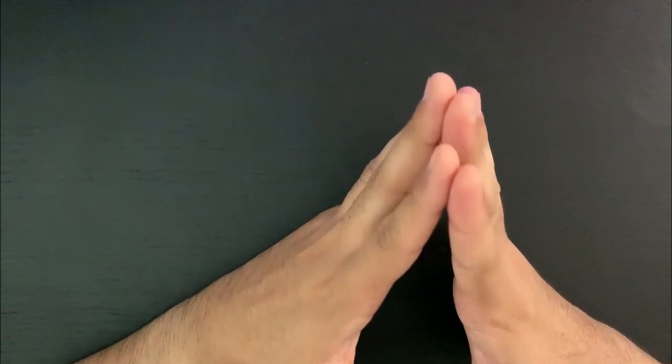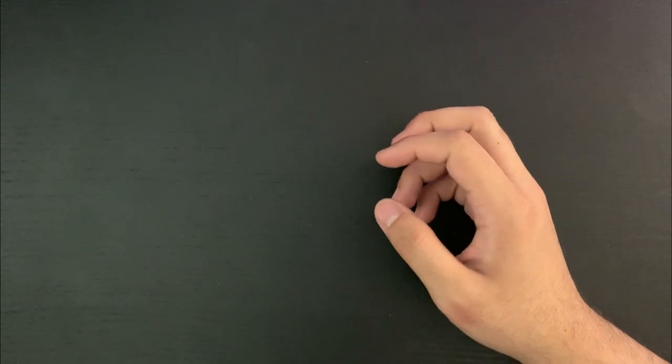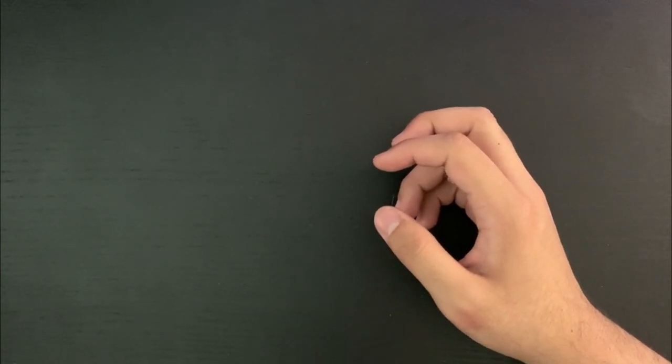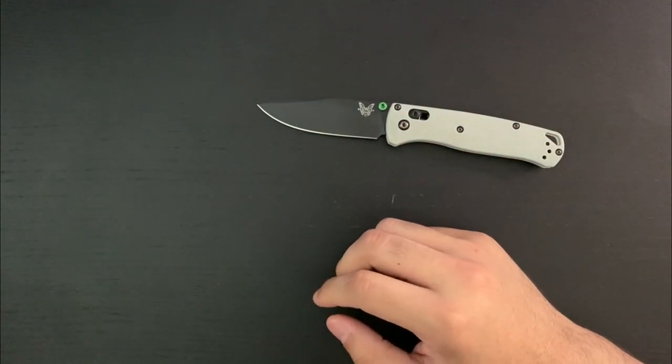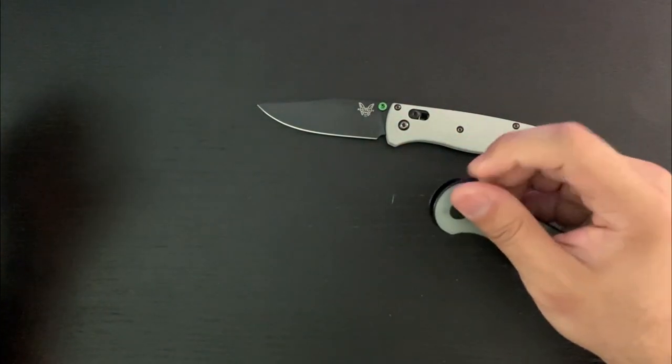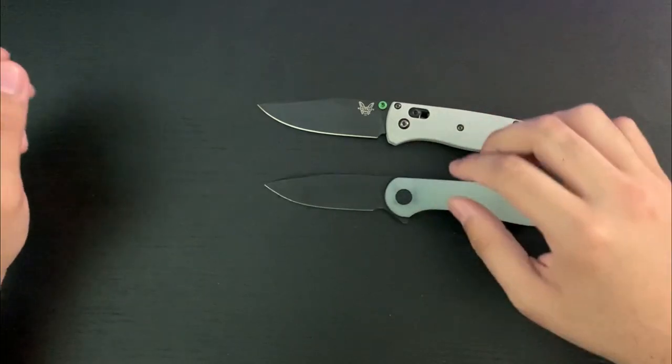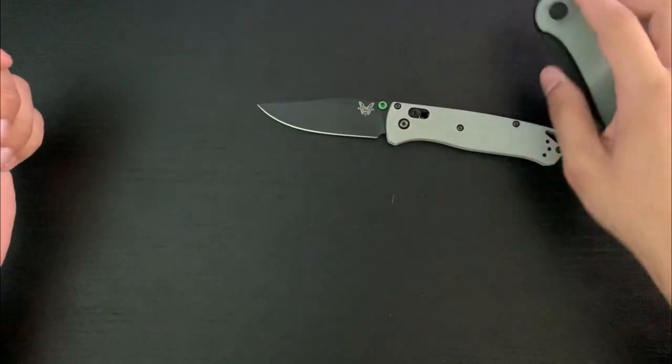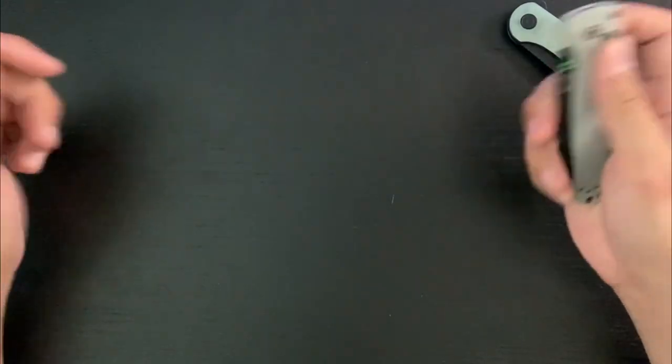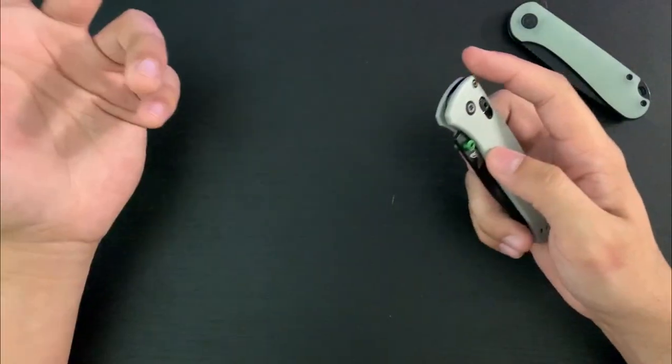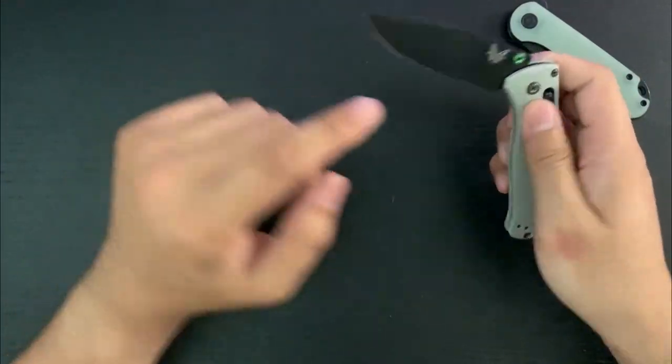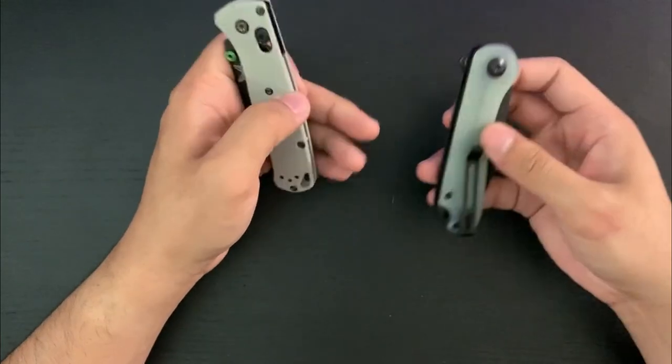And then, the most common thing, probably, is a knife. So, a pocket knife like this, like a Benchmade Bugout. It's very popular. The Civivi Elementum. Very popular knives. Usually, they're folding knives with like a pocket clip, locking blade, straight edge. That's usually what people carry.